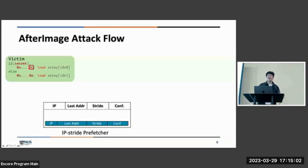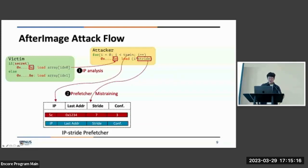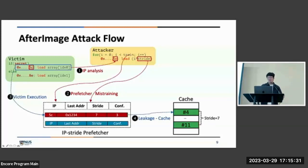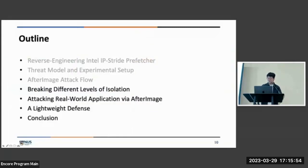Consider a victim that has a secret dependent branch. The attacker will first analyze the IP of the victim and generate a load instruction that matches the target load instruction in the victim. And he will then mistrain the prefetcher with a given stride. Later, the victim will run. And then, if the target load is executed, the attacker can then reveal the secret from the cache by detecting the stride in the cache. Instead of using the cache, we also provide an alternative method that checks if the prefetcher is still triggerable or not. And it will avoid using the cache primitives. We will introduce it more later.